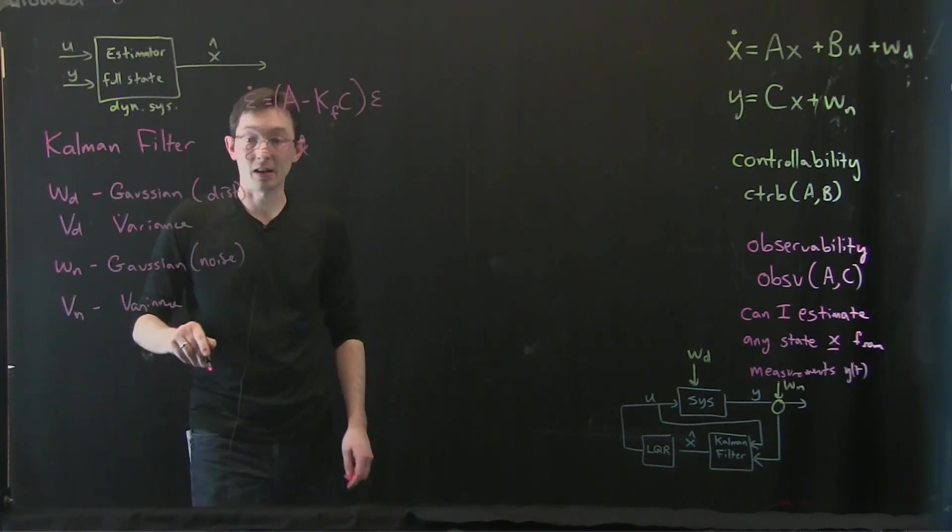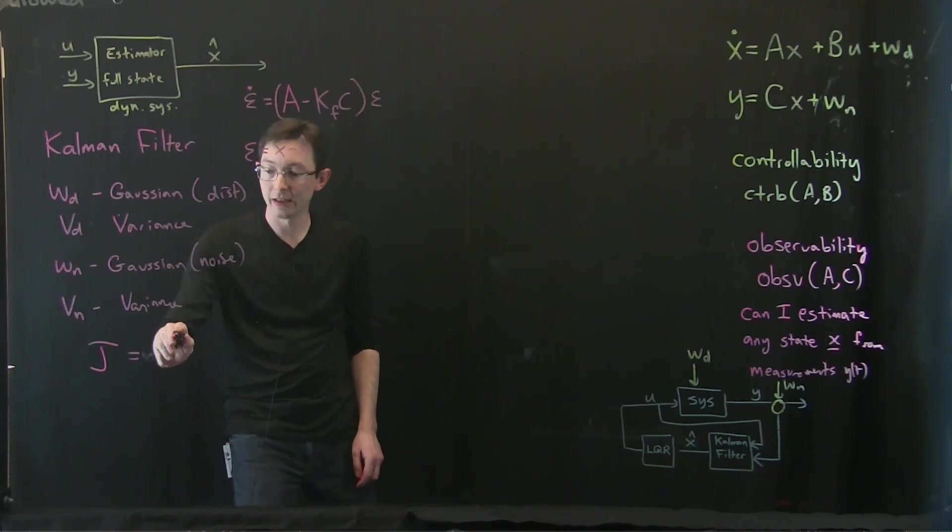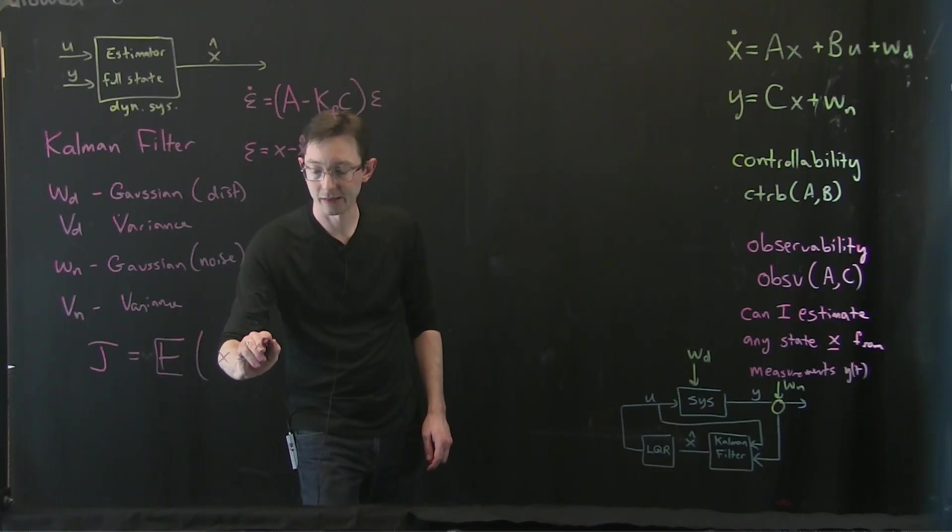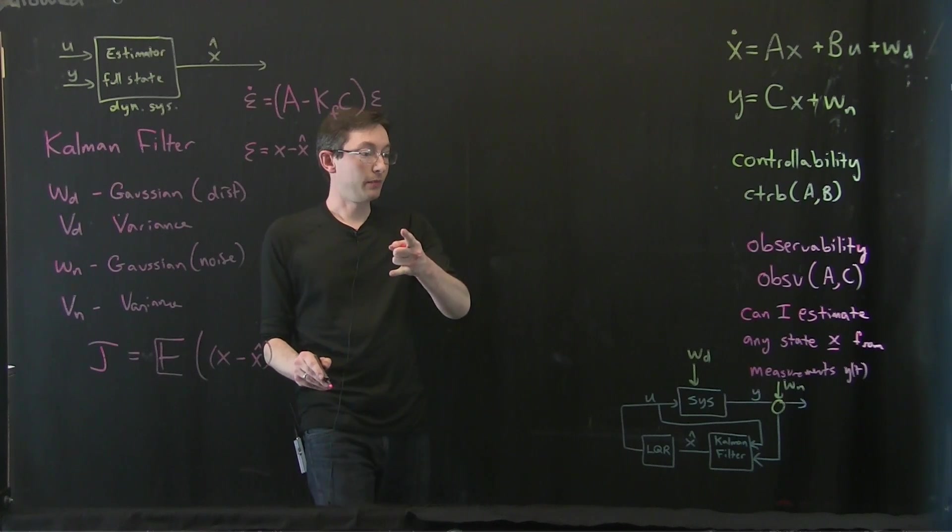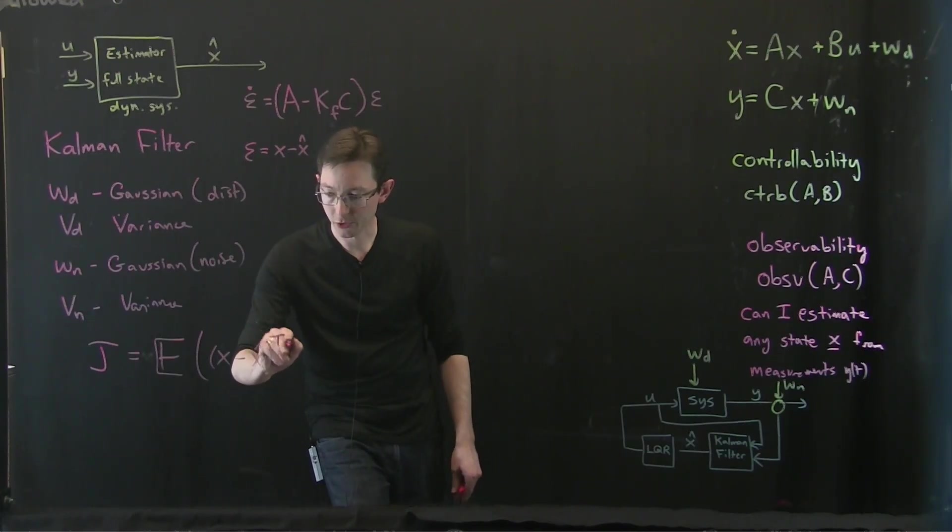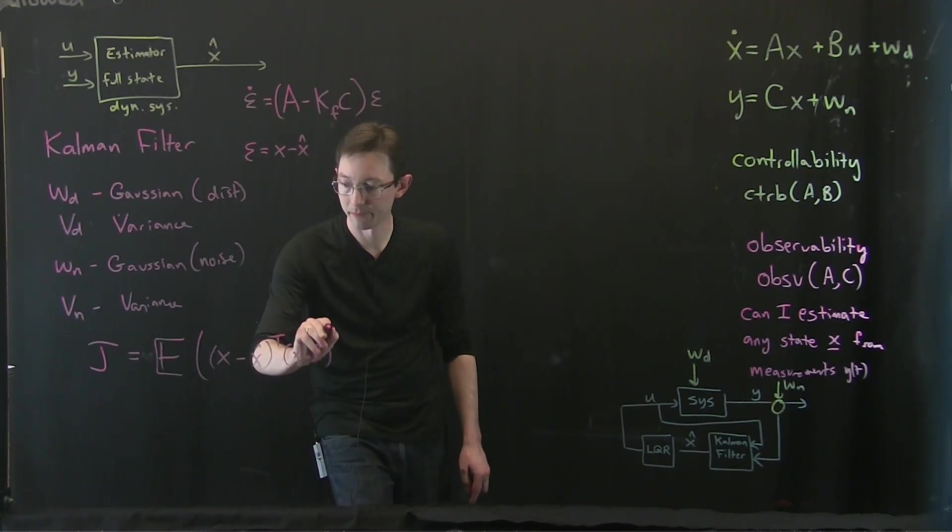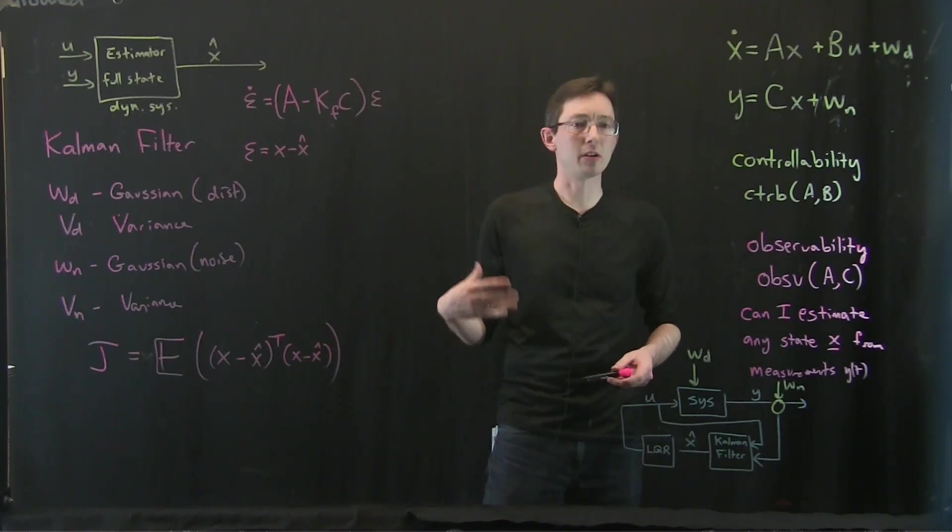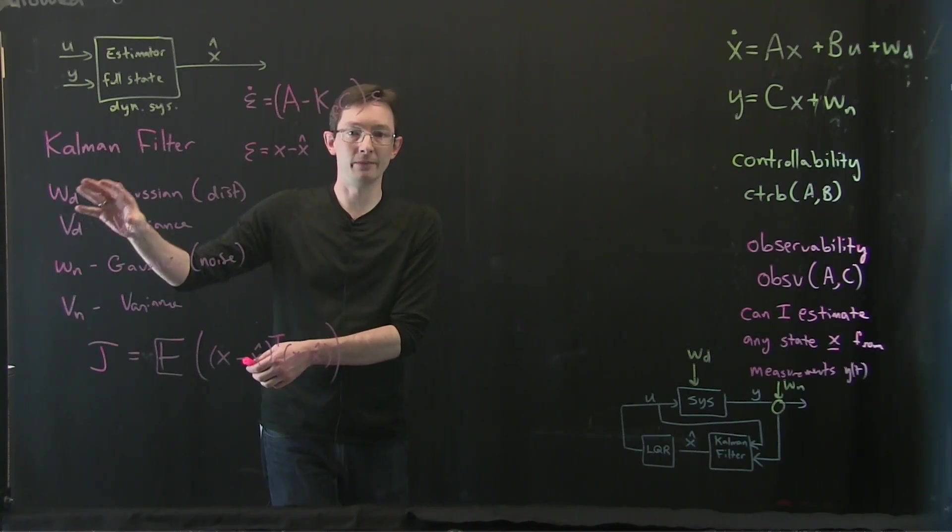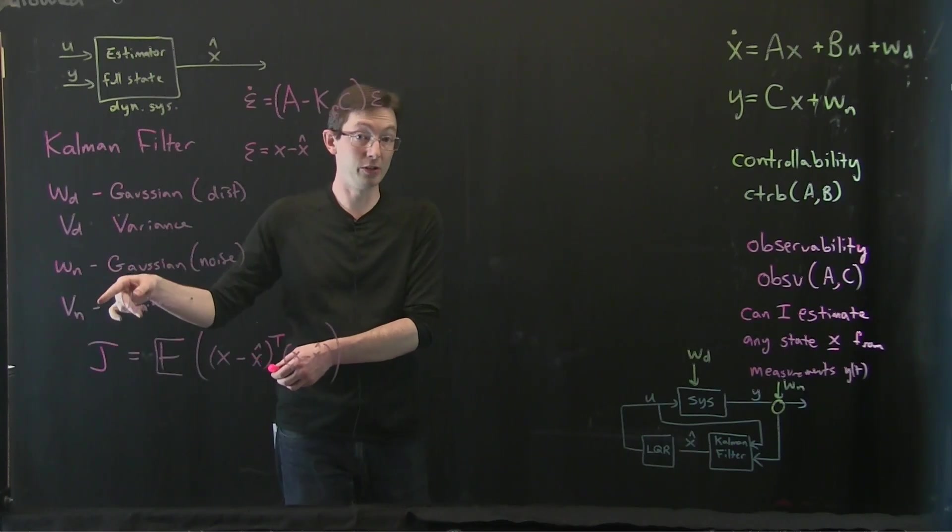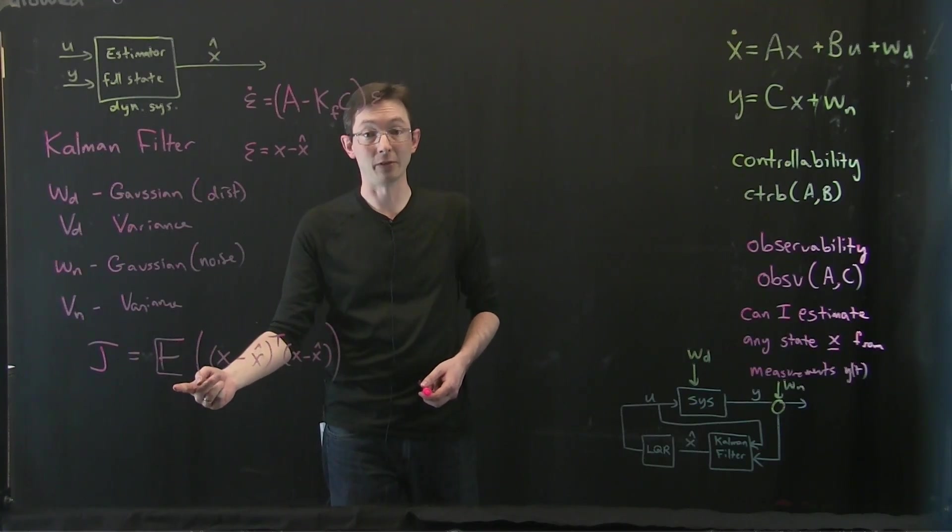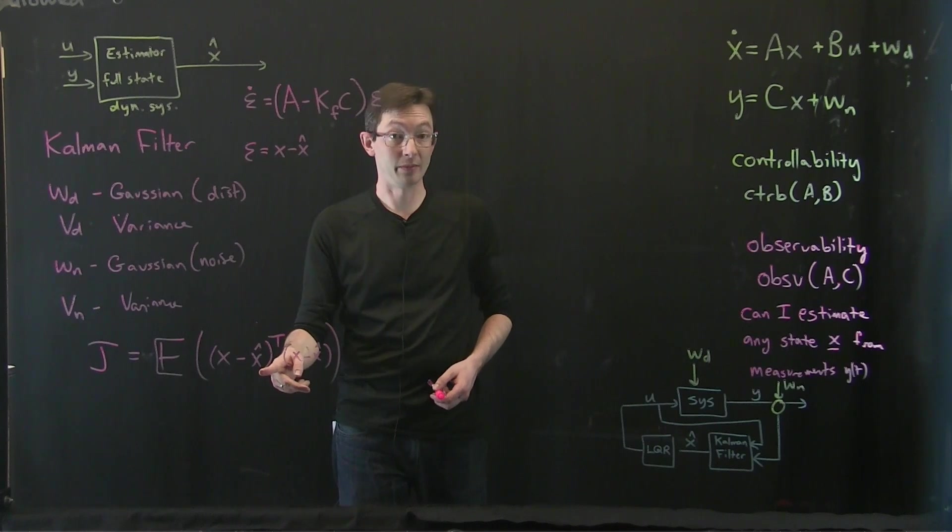And in fact, they minimize a cost function J, which is essentially the expectation value of X minus X hat. It's a column vector, X minus X hat, transpose times X minus X hat. This is a little bit more tricky to picture. But basically, if I had an ensemble of different disturbances and noises sampled from these distributions, then I'd want to choose this Kalman filter gain to minimize the expected error between my state, my full state, and my estimate.